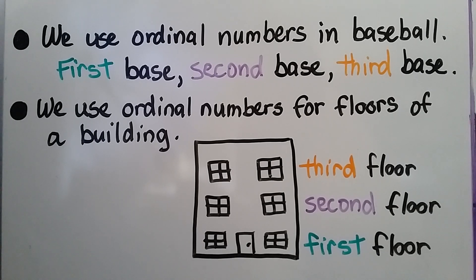We use ordinal numbers in baseball. First base, second base, third base. We even use ordinal numbers for floors of a building. The first floor, the second floor, the third floor.